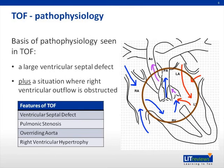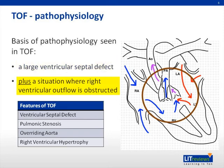The defects seen in TOF are caused by anterior cephalad malalignment of the ventricular septum during development. The portion affected is close to the outflow tracts from the ventricle, causing a variety of problems. This malalignment results in the two important components to the pathophysiology of TOF: a large ventricular septal defect, or VSD, plus a situation where right ventricular outflow is obstructed.